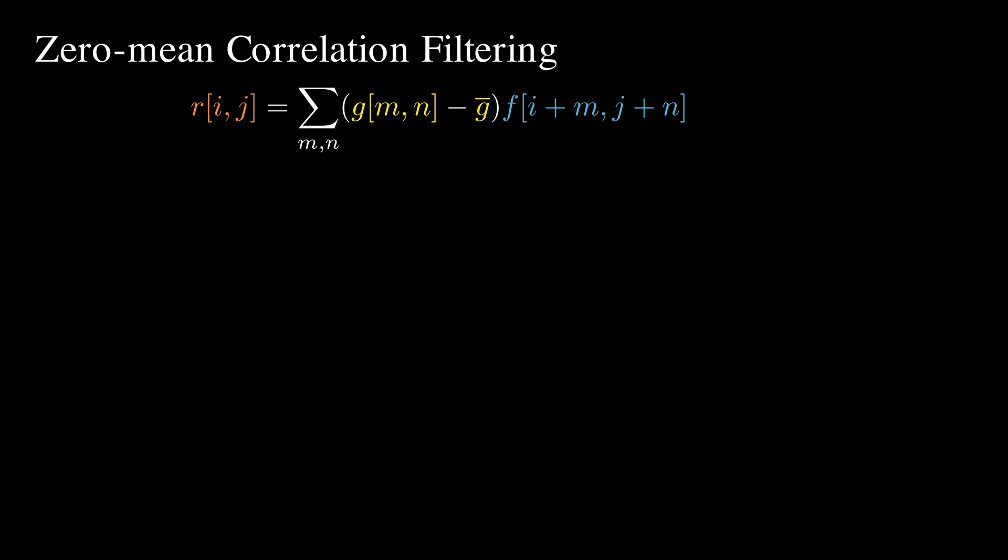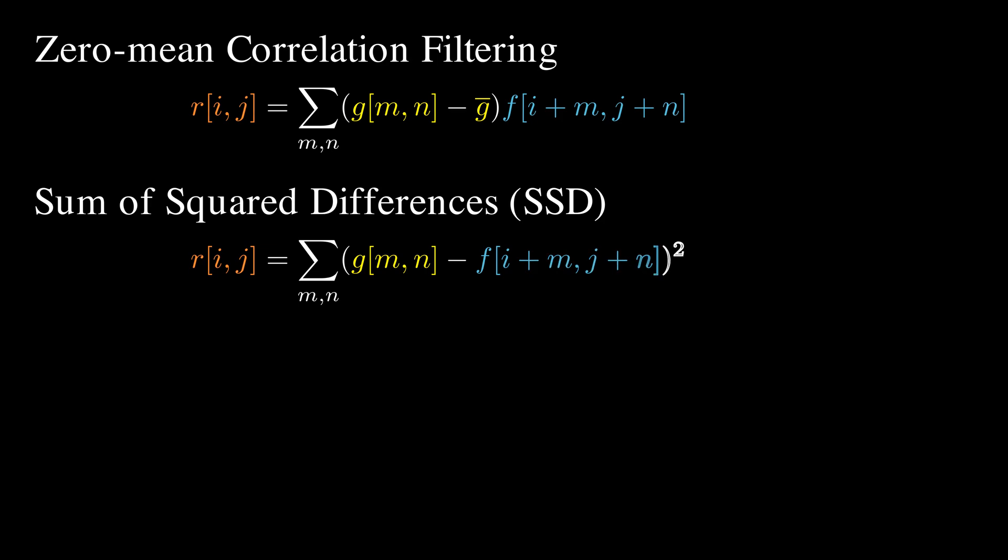So which method should we use? Zero-mean correlation filtering is fast, but not the most accurate. SSD is more precise, but sensitive to lighting changes.